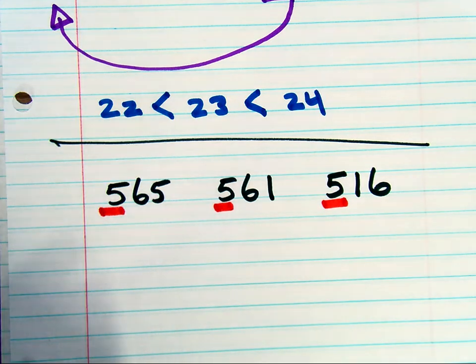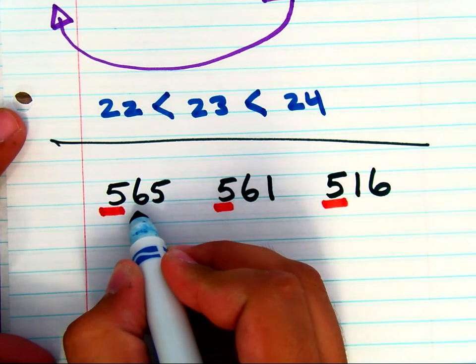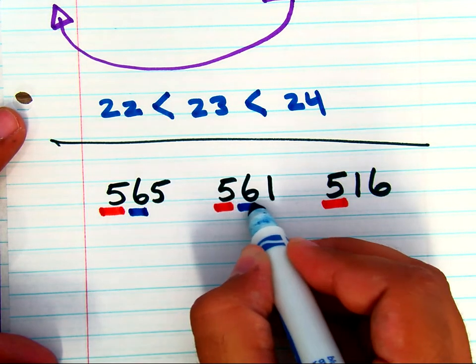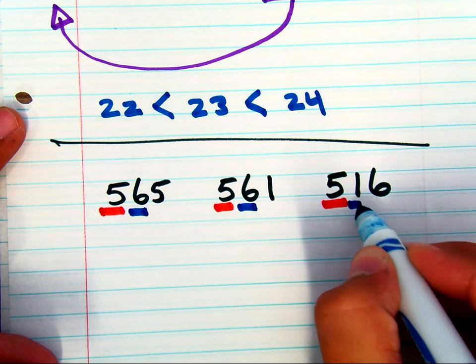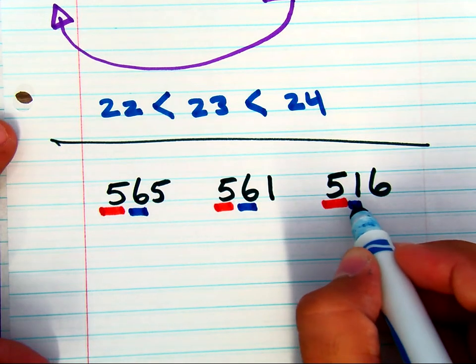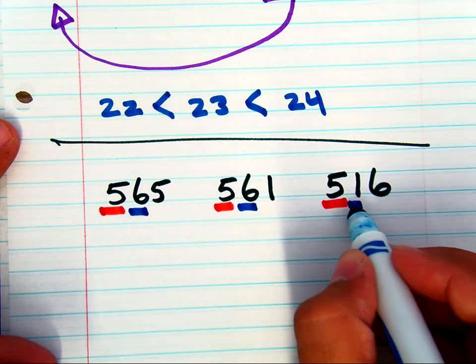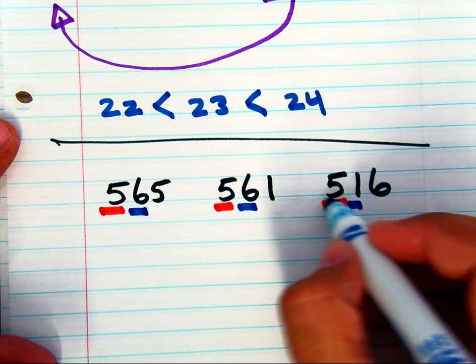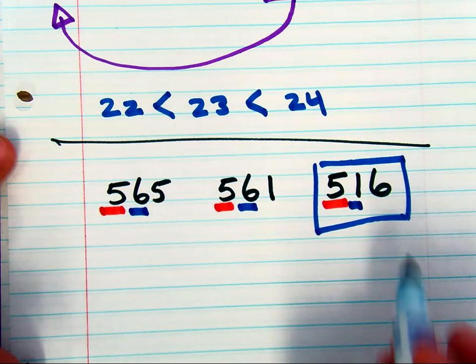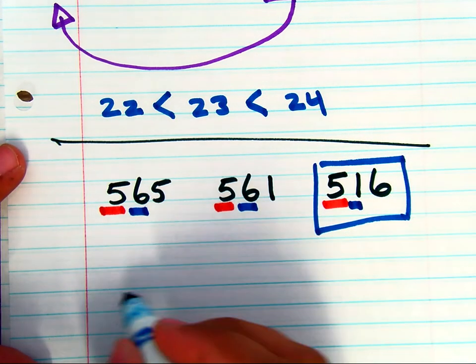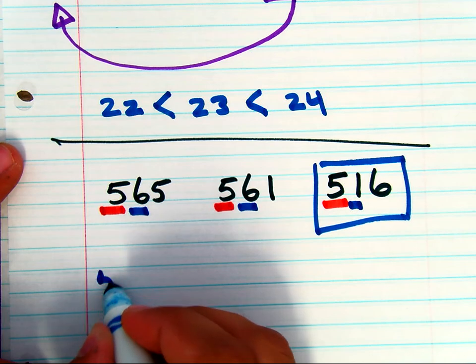So you want to look at the tens place next. The tens place has six tens, six tens, and one ten. The one ten is less than the other two tens. So that's going to be done first. So we know already that that number is going to be put first.